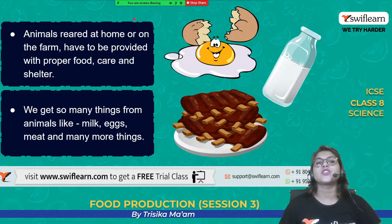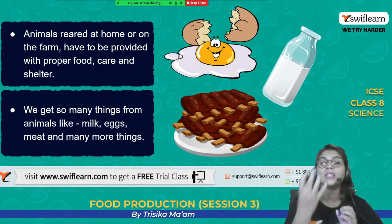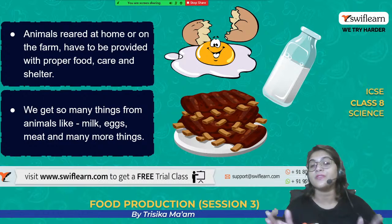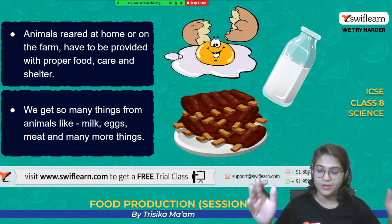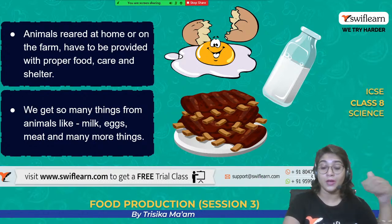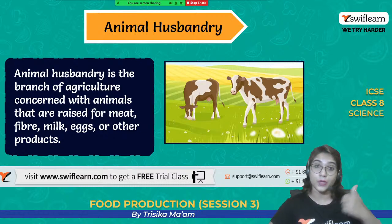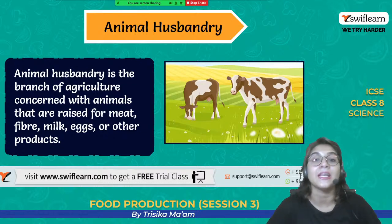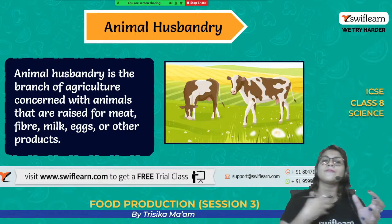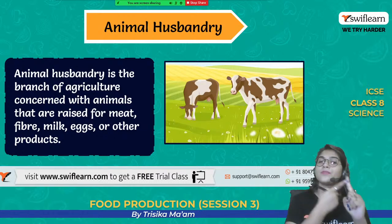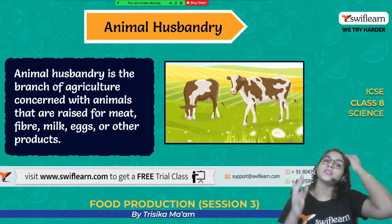Animals reared at home or in farms are given proper food, care, shelter, and proper conditions so that we can get different products from them — milk, egg, meat, and many more. This rearing and raising of animals for getting more and more products is basically known as animal husbandry. Animal husbandry is the science or branch of science that deals with the raising of different animals so that we can get a proper amount of meat, milk, egg, fibers, and all the different products from animals.